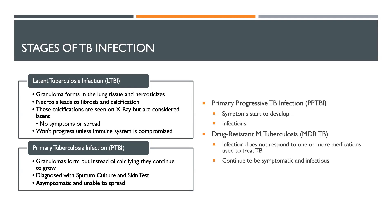If the immune system is compromised, they enter the second stage, which would be primary tuberculosis infection, or PTBI. This is when granulomas form but instead of calcifying, they continue to grow. We would diagnose this stage with a sputum culture and skin test, and the patient may still be asymptomatic at this point and unable to spread the infection.